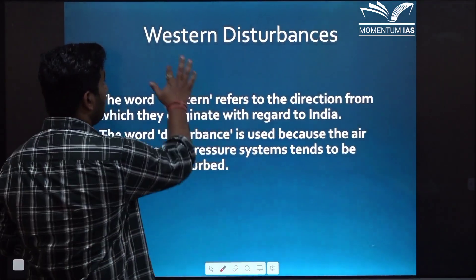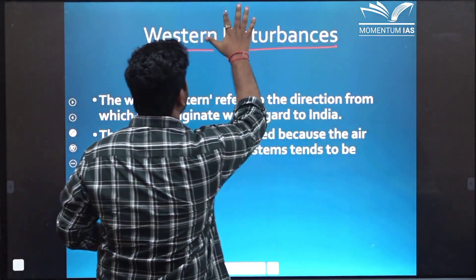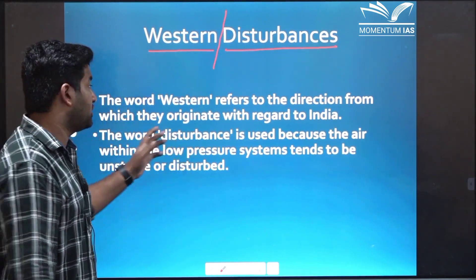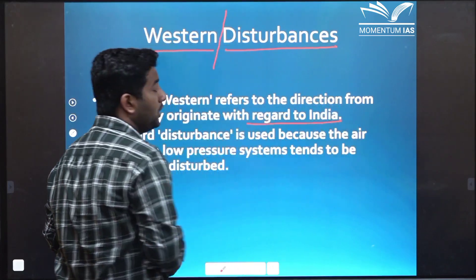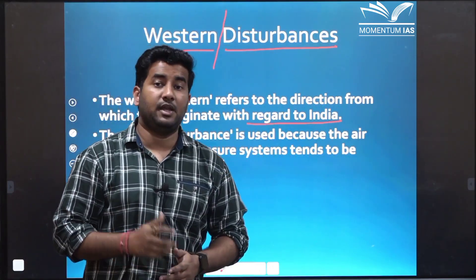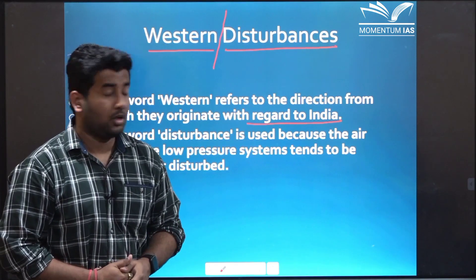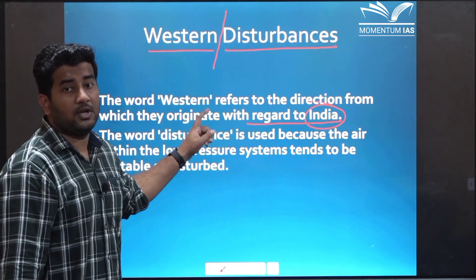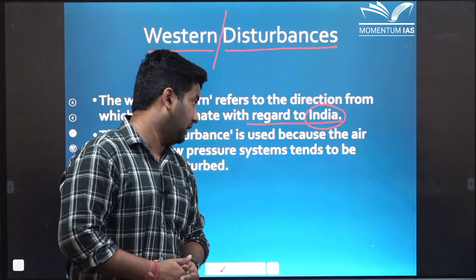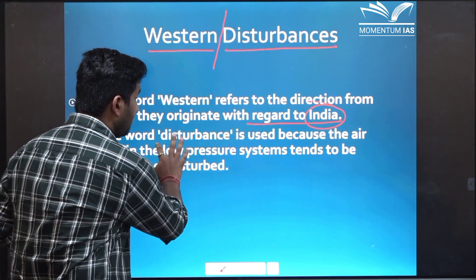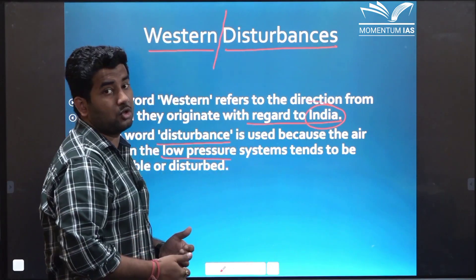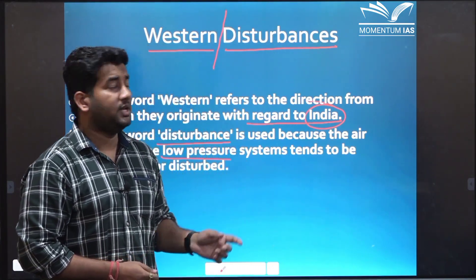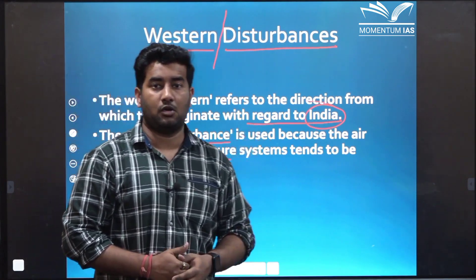Let's dissect this term. What do we actually mean by western disturbances? The word western that we have used here is in respect to India. There is a very interesting story behind western disturbance. This term was given by an Indian meteorologist in 1954. So he took India as a reference and the term western here refers to the area from where these storms generally originate. And the word disturbance here means the low pressure that generally brings storms. And from these storms the moisture from Mediterranean Sea, Caspian Sea and Black Sea generally comes to northern and northwestern part of Indian subcontinent.